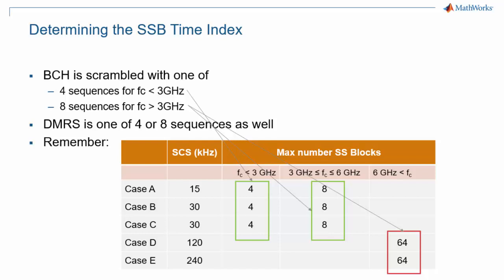As you may remember from the episode about the synchronization signal block, for a carrier frequency under 7.25 GHz, or FR1, there can be up to 8 occurrences, while that number is 64 for FR2, or millimeter-wave transmission. This means that another piece of information is needed to uniquely determine the SSB index for FR2 transmission.